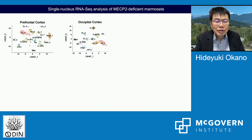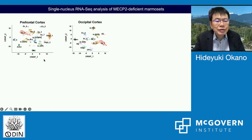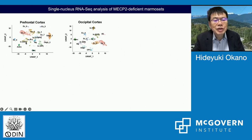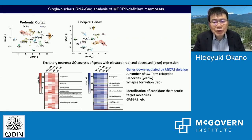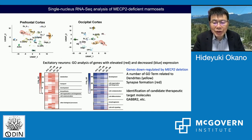What is the molecular basis? We performed single-nucleus RNA-seq from prefrontal cortex and occipitotemporal cortex. The UMAP plot shows clusters of microglia, astrocytes, oligodendrocytes, and various subsets of excitatory neurons and inhibitory neuron subsets such as VIP-positive neurons, somatostatin-positive neurons, and parvalbumin-positive neurons. We examined differentially expressed genes. Genes related to dendritic formation and synaptic formation are downregulated upon MeCP2 deletion. We also identified candidate therapeutic target molecules such as GABA-B receptor 2.